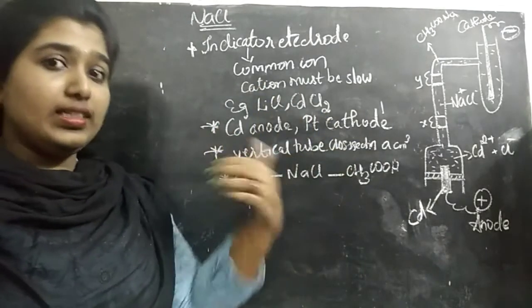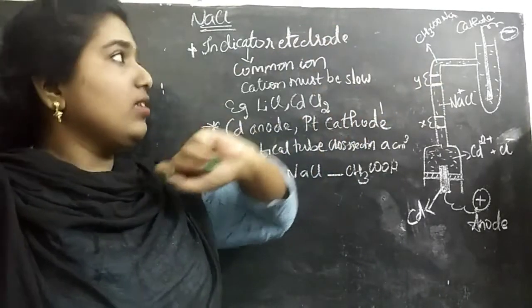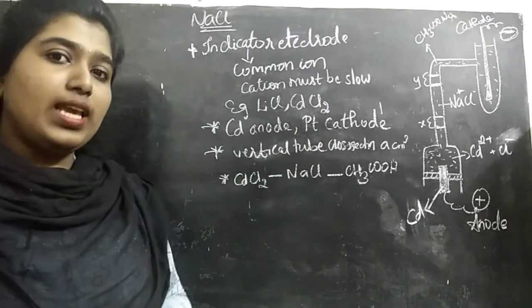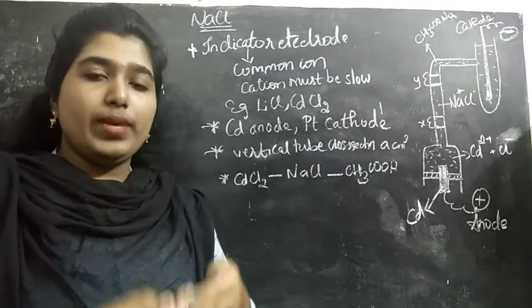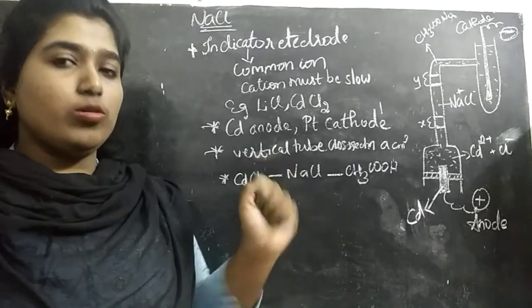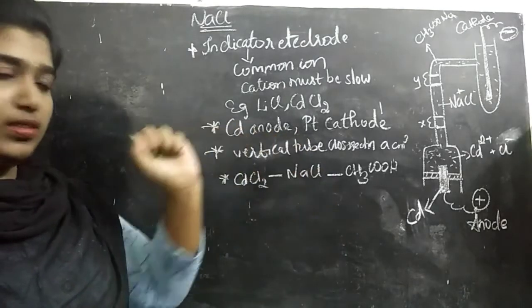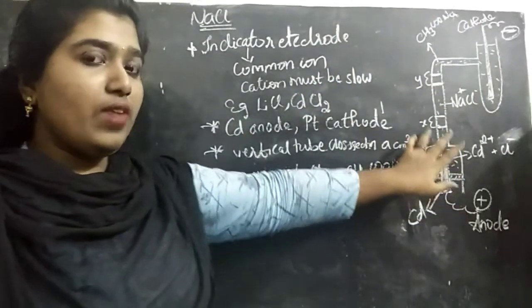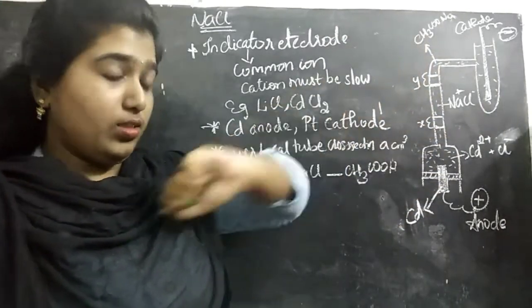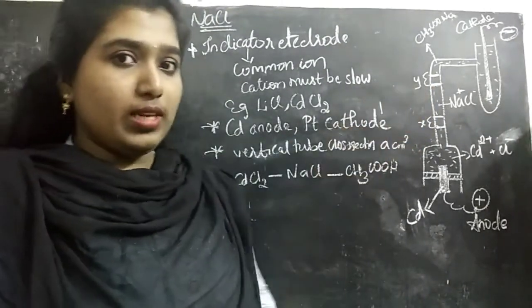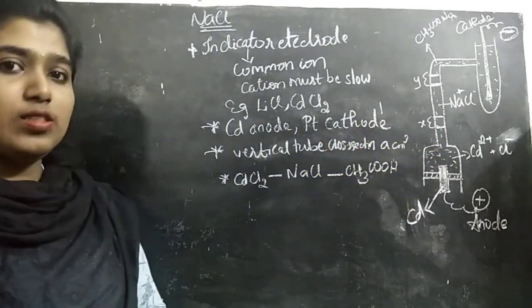We also take another electrolyte above that which acts as the cathodic compartment, and that is sodium acetate. We should take a comparatively slow cation because if it moves very fast, the boundary cannot be distinguished and will mix together, so we cannot interpret the movement of the boundary. Here our main principle is the movement of the boundary. We use cadmium as the anode and platinum as the cathode. The vertical tube has a cross section of a centimeter cube. The arrangement is cadmium chloride, above that sodium chloride, and above that sodium acetate. In between all these, we can see a small boundary. When electricity is passed, there will be a movement of the boundary, and that is how we calculate the speed or rate of movement.